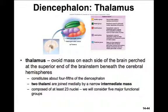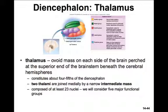The thalamus is a very complex organ, composed of about 23 different nuclei. Here we'll consider the five major functional groups. The anterior group is part of the limbic system involved in memory and emotion. The medial group handles emotional output to the prefrontal cortex and awareness of our emotions. The ventral group provides somesthetic output to the post-central gyrus and allows signals from the cerebellum and basal nuclei to reach the motor areas of the cortex. The lateral group is involved in somesthetic output to association areas of the cortex and contributes to emotional function of the limbic system. The posterior group relays visual signals to the occipital lobe via the lateral geniculate nucleus and auditory signals to the temporal lobe via the medial geniculate nucleus.